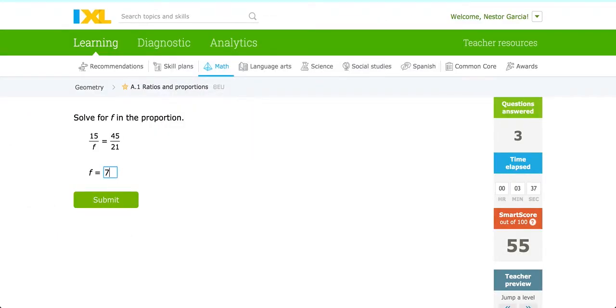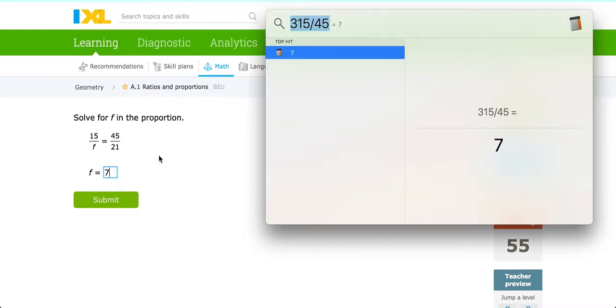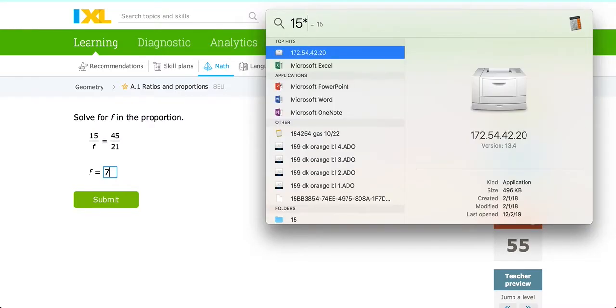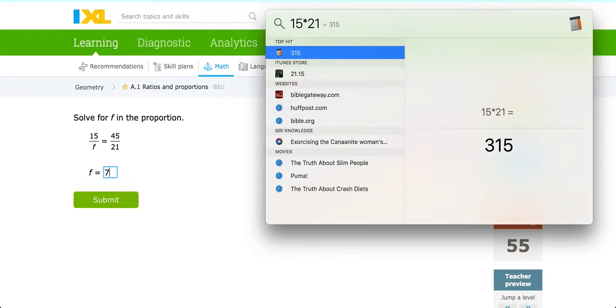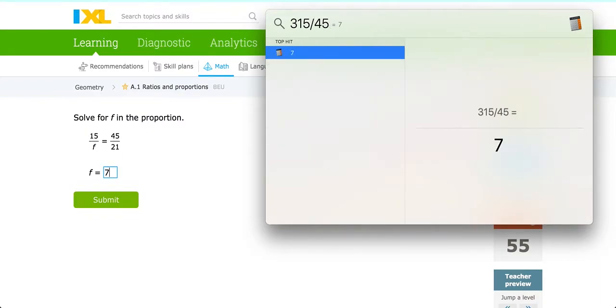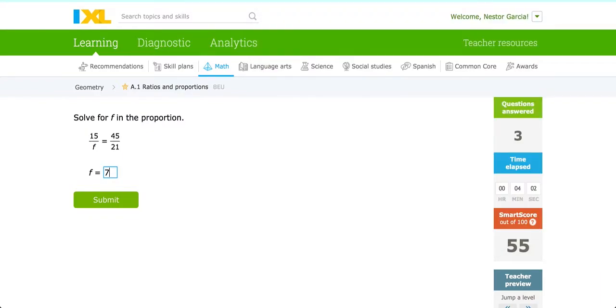Using the cross product rule. Now the shortcut to this would simply be to take this cross product, 15 times 21. 15 times 21. And the result, which is 315, you divide by that third value, which is 45. We now take 315 divided by 45. And sure enough, we get an answer of 7.